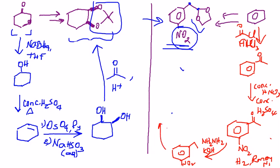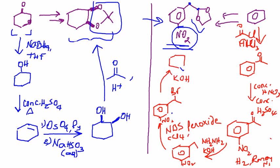This can then be subjected to NBS reaction, CCl4 is your solvent, typically a peroxide is taken because this is a free radical reaction and that will give you the bromo derivative at the benzylic position. We are going to have to subject that to KOH treatment that gives us the double bond.